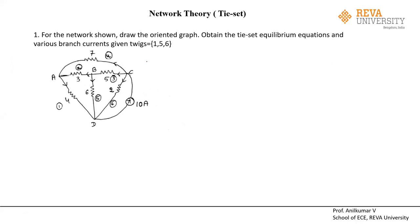Hi students, welcome to the session. In this session we'll be seeing how to solve the tie set schedule problem and how to find the tie set equilibrium equations, how to get your loop currents as well as your branch currents. They're asking first to draw the oriented graph, obtain the tie set equilibrium equations, and find the branch currents.